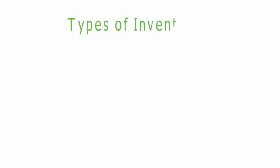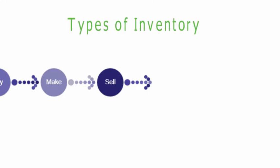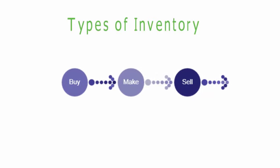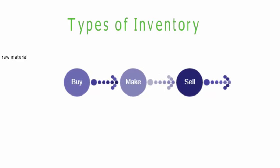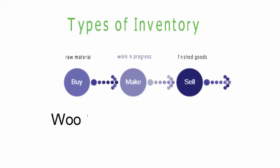Types of Inventory. Inventory comes in different forms, therefore different types of inventory such as raw material, work in progress and finished goods can be found in the supply chain. Let's take a look at Woodfern Inc. to explain these types of inventory.